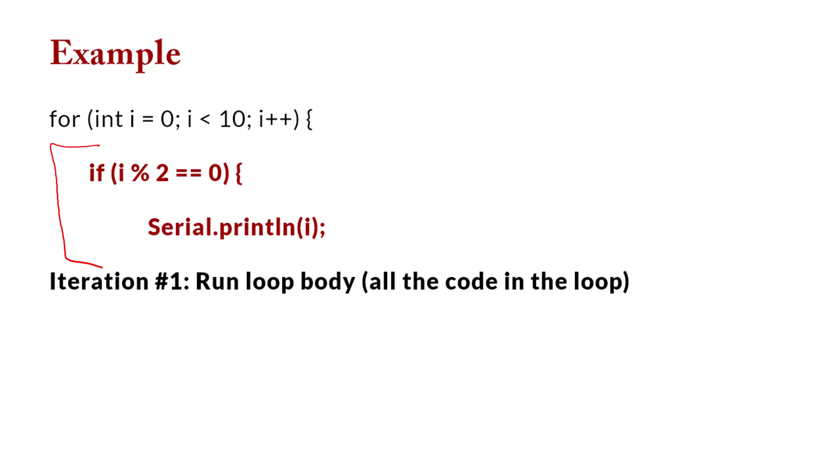In this case, we check the number, do the modulus of two. If the modulus of two is zero, that means it's even. So we print out that number. So we run the entire loop. Then, we finish the loop. We are right here. We're done with the loop.